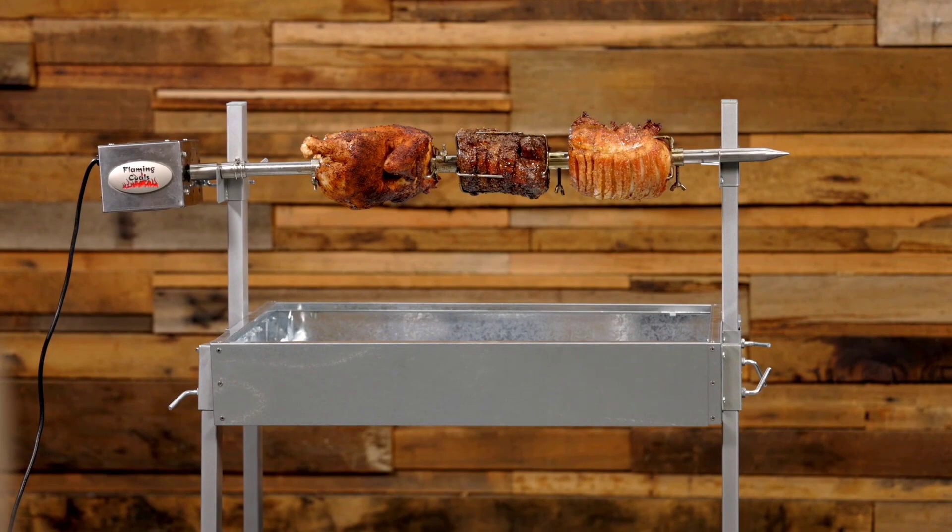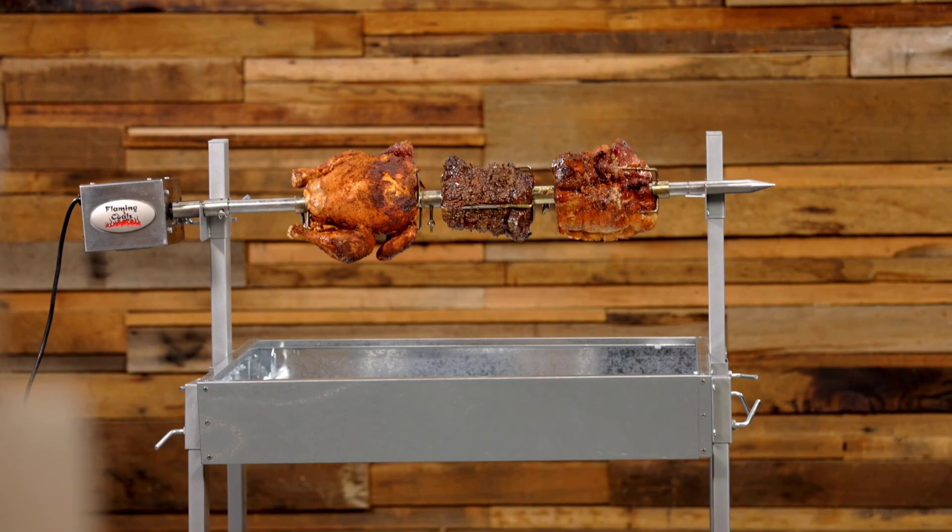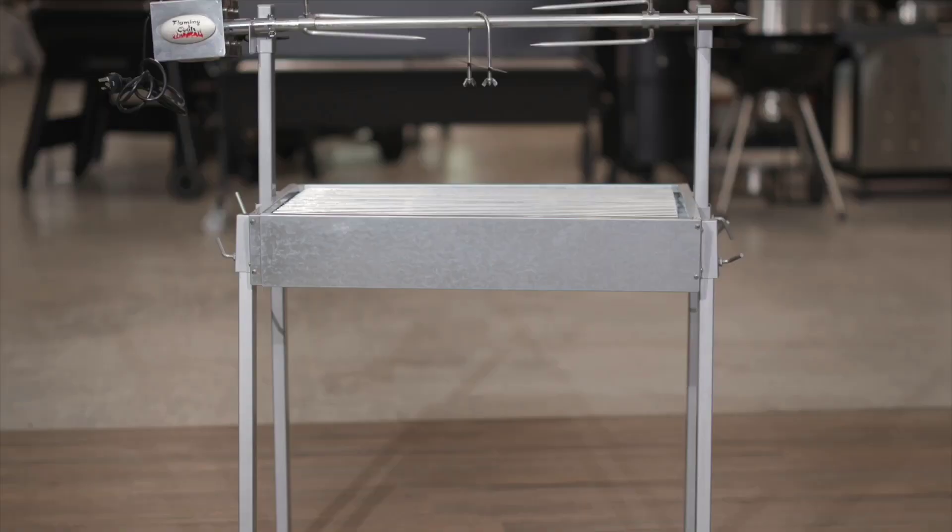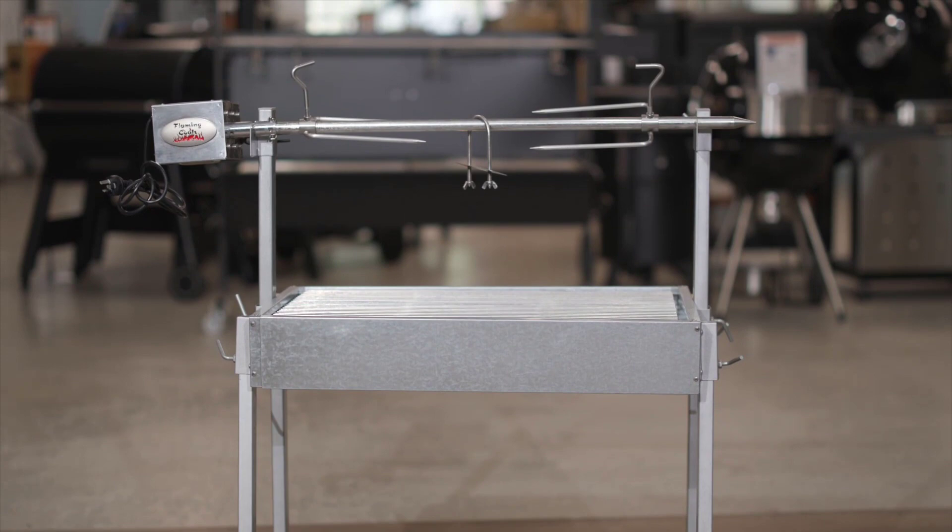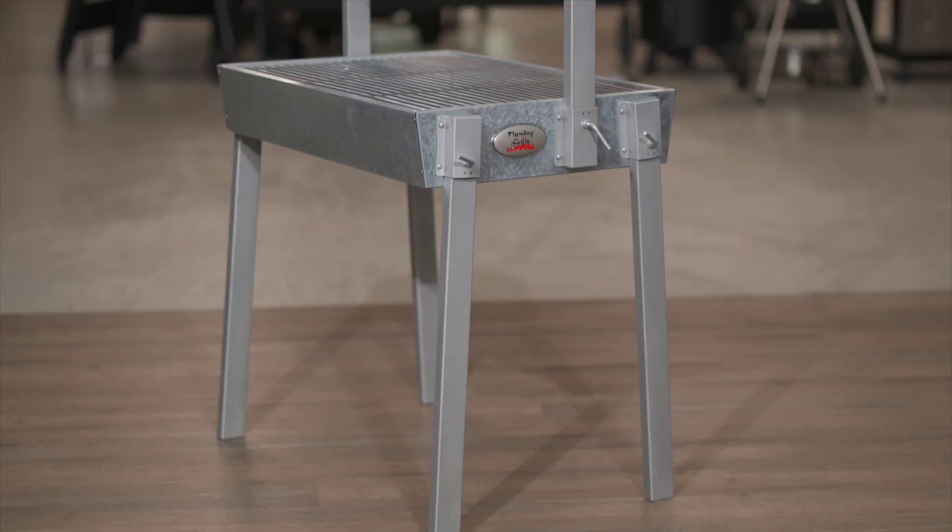The Extendable Spit is not only great value for money but is a versatile spit roaster suitable for all backyards and all occasions, big or small. The no screw design means that you'll have the rotisserie assembled without any tools and be ready to cook in under five minutes.